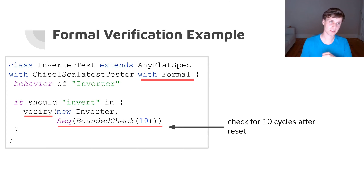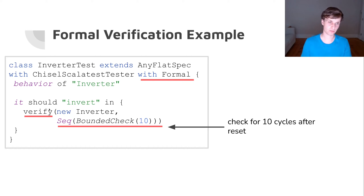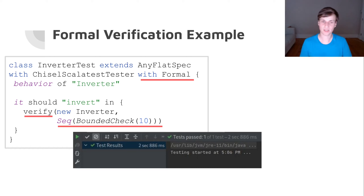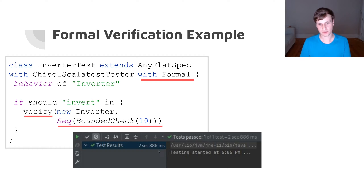We use the same Scala unit testing framework and the same chiseltest extension, but we also add the 'formal' extension. Instead of a test method we now have a verify method, and the second new thing is a verification command. Right now the only supported command is a bounded check, which tries to see if for the first n cycles after reset there's any way to fail an assertion. When we run this in the IDE we get a unit test response saying it all works well.